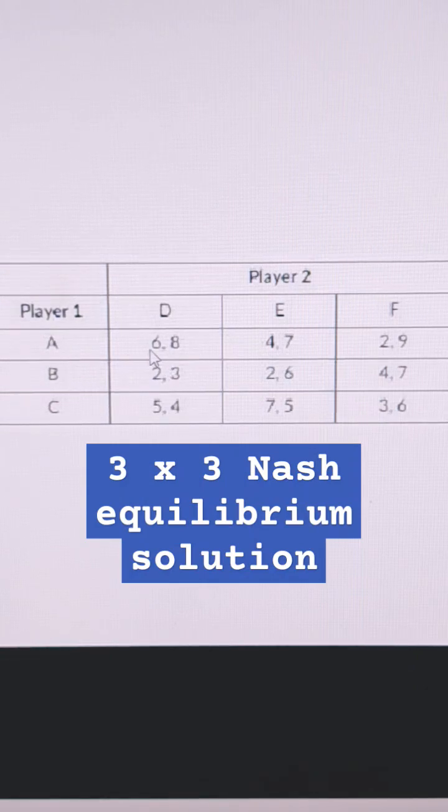This is a 3x3 game theory problem. The first number in each box belongs to the left player, the second number belongs to the top player. Let's assume these are positive profits.